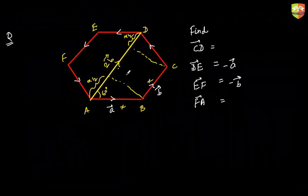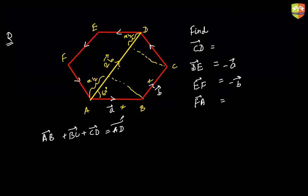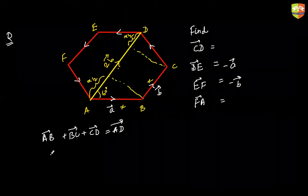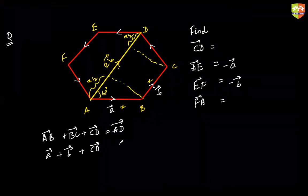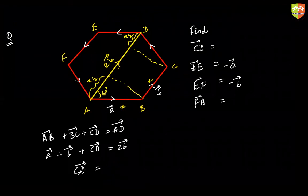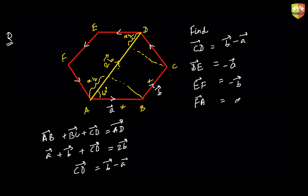Using the polygon law of addition: AB plus BC plus CD equals AD. Substituting, A plus B plus CD equals 2B. Therefore CD equals B minus A. And since FA is the negative of CD, FA equals A minus B.